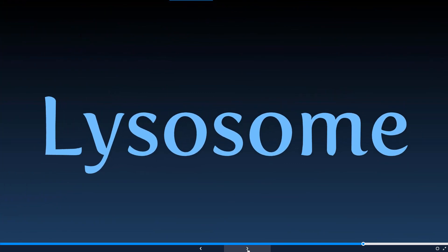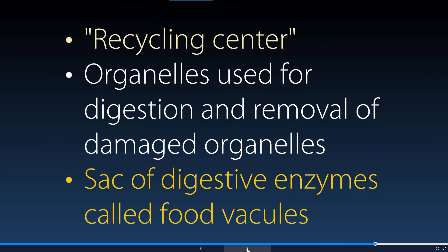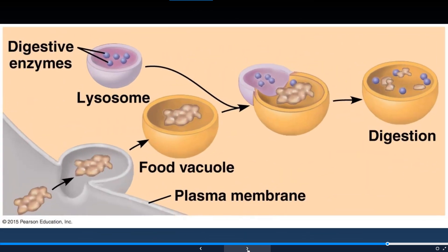We also find lysosomes, which are really important for cleaning up — they're referred to as the recycling centers of the cell. This organelle digests and removes any damaged organelles present in the cell. It looks like a little vesicle, but it's a sac containing digestive enzymes used to break things down, making it important for dealing with dead and decaying material. For example, food vacuoles that bring food from outside the cell will pair up with a lysosome, which imports its enzymes to help break down that food.